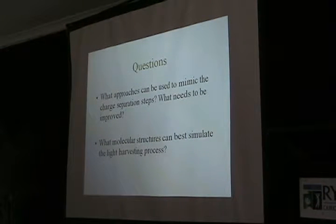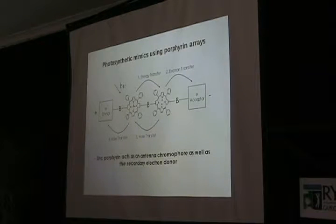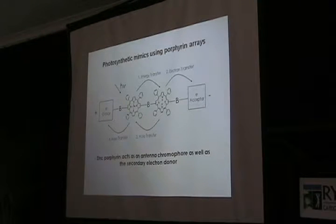So the two steps, what approaches can be used to mimic the charge separation steps? What needs to be improved? And if we're talking about the light harvesting area, what molecular structures can be used to simulate that? I thought I'd just illustrate this with an example. There are lots of work that's been done over the last couple of decades, really, on photosynthetic mimics, particularly the charge separation mimics. And this is a common process or common structure that's used.